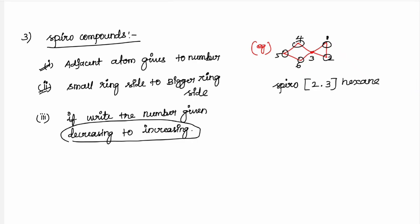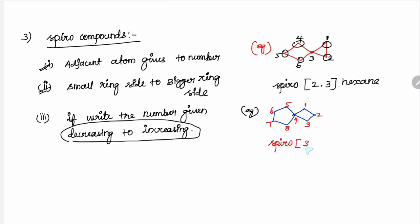Another example: 5-member ring and 4-member ring. Here: 1, 2, 3, 4, 5, 6, 7, 8 — smaller ring side given the number first. This is Spiro[3.4] — one, two, three here; one, two, three, four here. Three is to four — 8 carbons available: Octane. So the name is Spiro[3.4]octane.